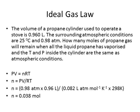Let's look at an example using the ideal gas law. A propane cylinder used to operate a stove has a volume of 0.960 L. The surrounding atmospheric conditions are 25°C, which we convert to 298 K by adding 273. The pressure is 0.98 atmospheres.